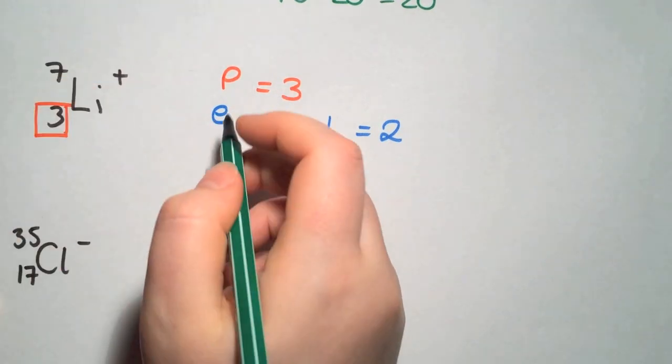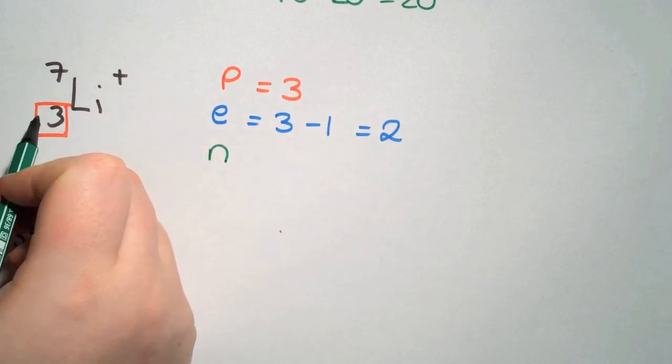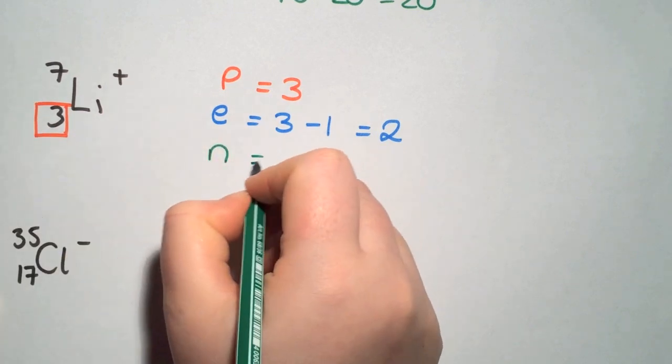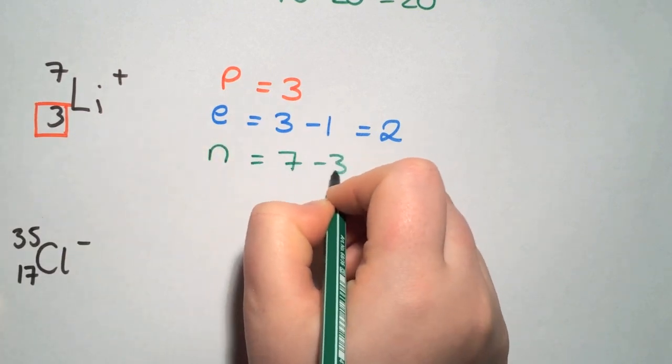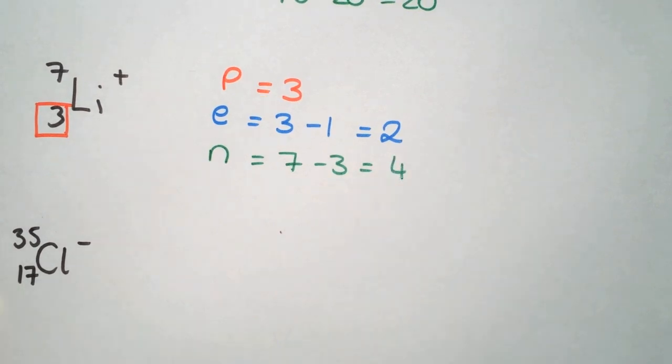Finally, the neutrons, as we know it is mass number minus atomic number. So that is 7 minus 3 equals 4.